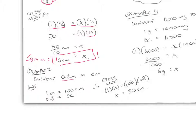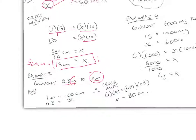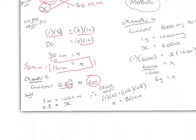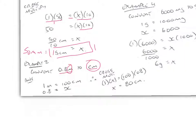Let's take another example: convert 0.8 of a metre to centimetres. We write down our equivalent rate — 1 metre is the same as 100 centimetres, which is noted in our log tables. Then 0.8 metres, keeping metres on the same side, is equal to x centimetres. Cross-multiplying, 1 times x equals 100 times 0.8, so x equals 80 centimetres. Therefore 0.8 of a metre is 80 centimetres.